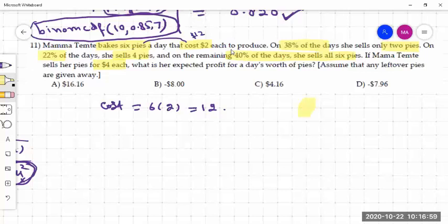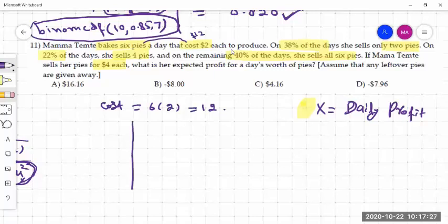So X here is representing her profit. Daily profit. So X is equal to daily profit. This is a random variable. So what we do is that we first make this distribution here for her daily profit and the probability. So X is her daily profit and then the probability of that daily profit.